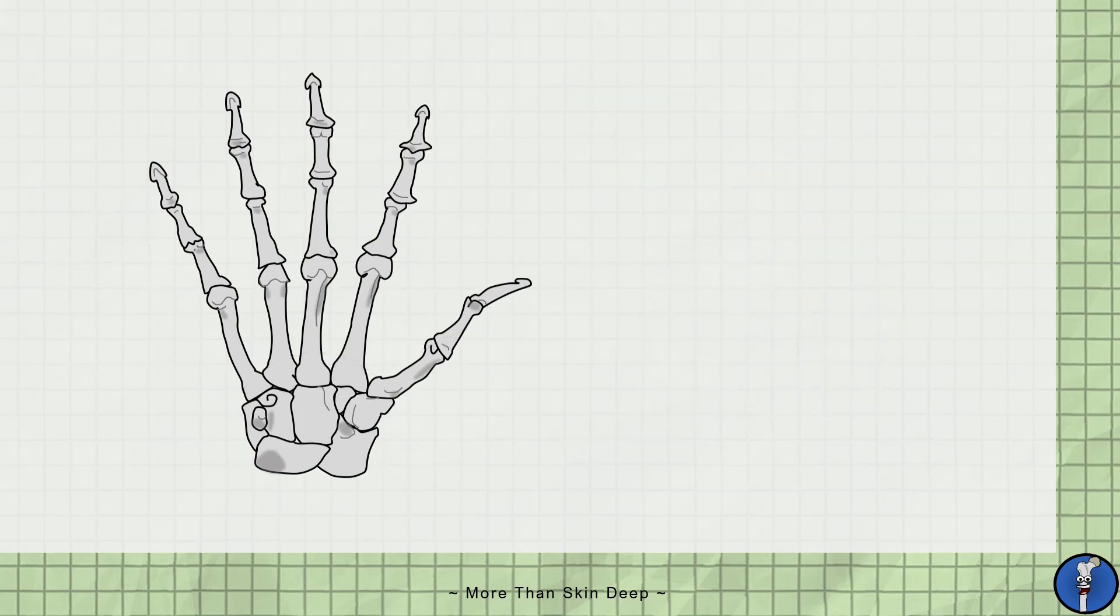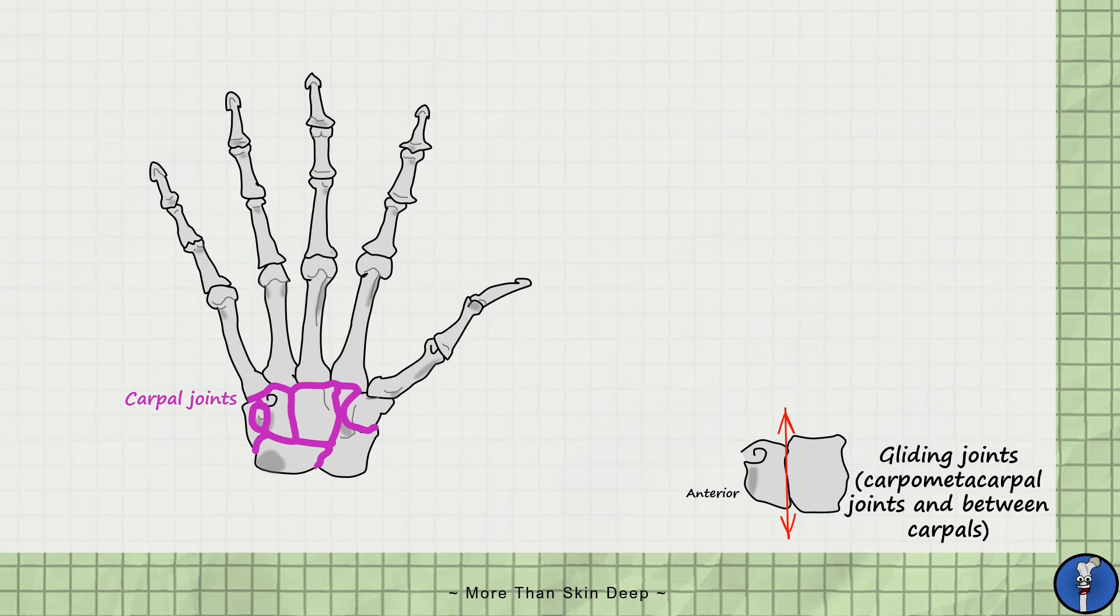Now we'll cover the ways the numerous bones articulate with one another in the hand. There are many different types of joint in the human body and each serves a unique purpose. The simplest joints in the hand are basic sliding joints which allow only gliding movements to contribute to the shape of the hand. In the hand the carpal joints are all gliding joints.